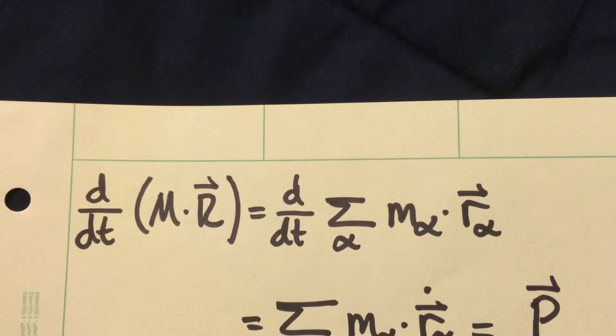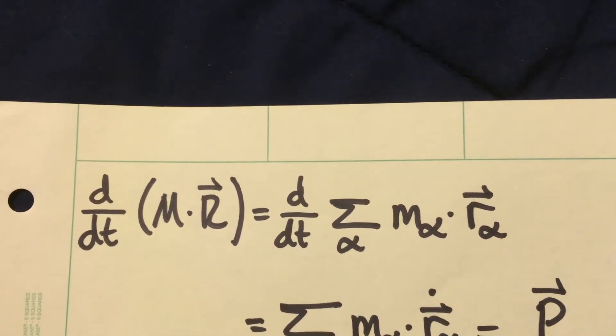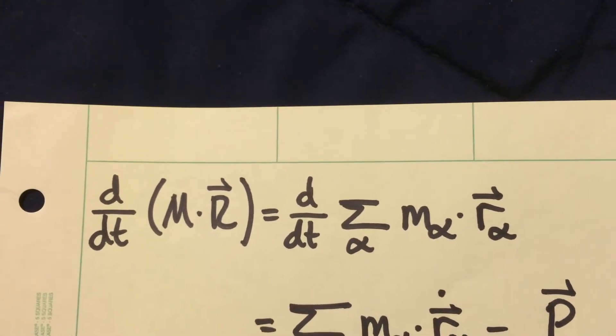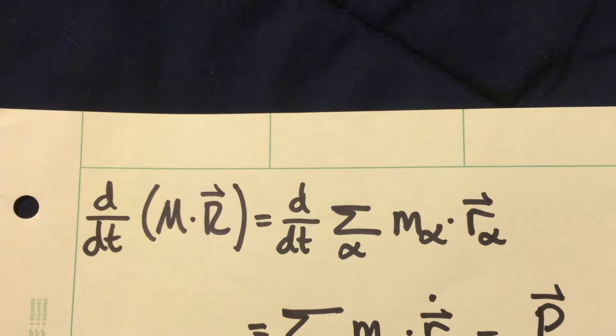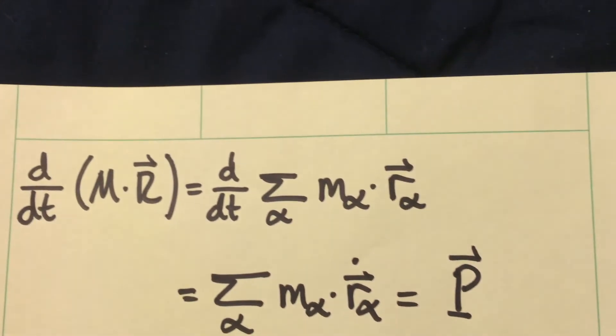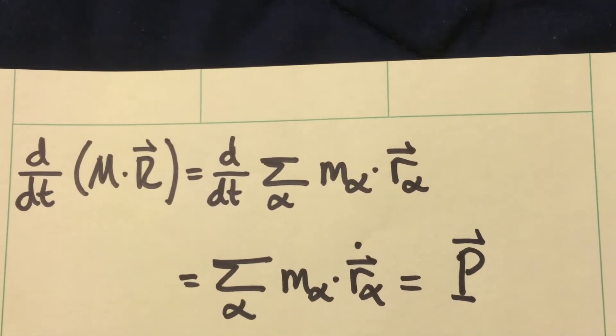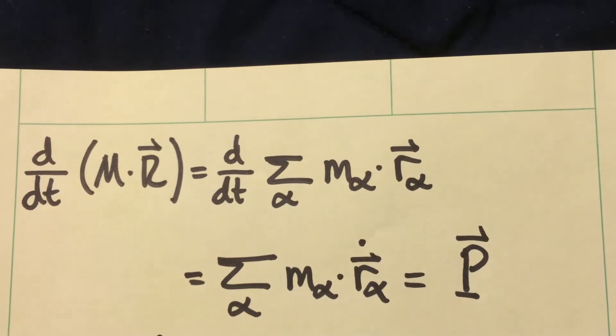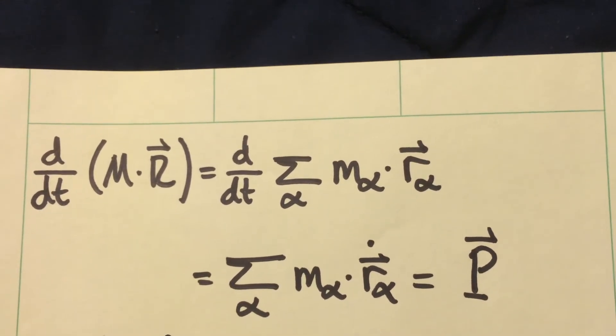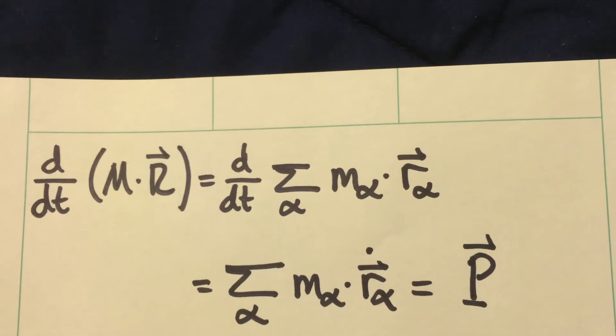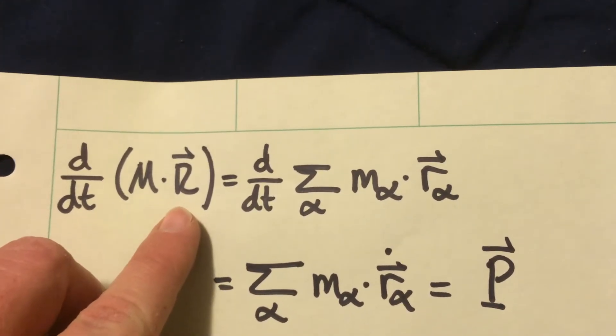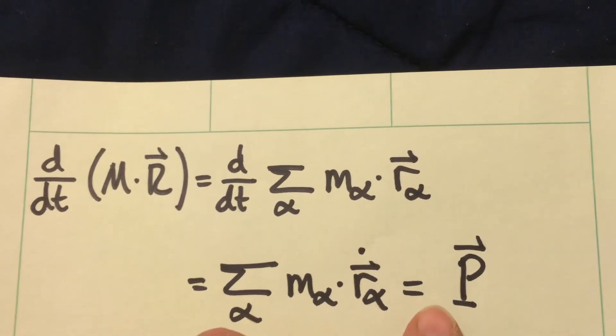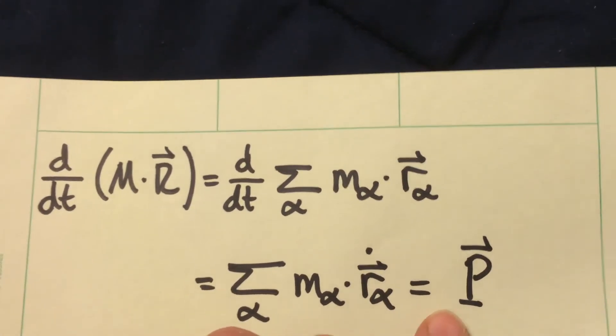So coming back to the connection with conservation of momentum, if we take a time derivative of the total mass of the system times the position of the center of mass, it's going to be equal to a time derivative of that sum. We can take the time derivative inside the summation, since alpha and time are independent of one another, and what we find is the time derivative of m times the position of the center of mass is the same as the momentum vector for the whole system.